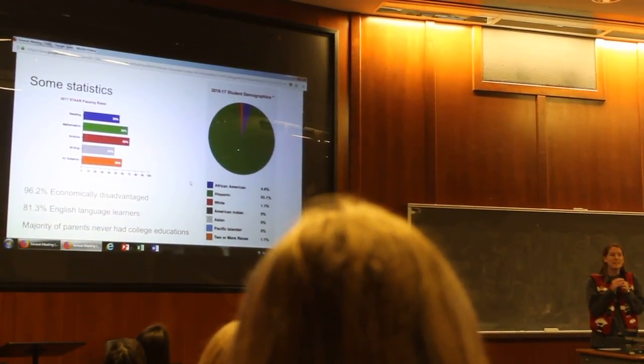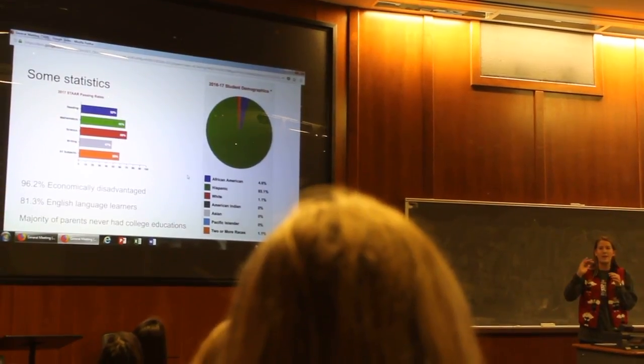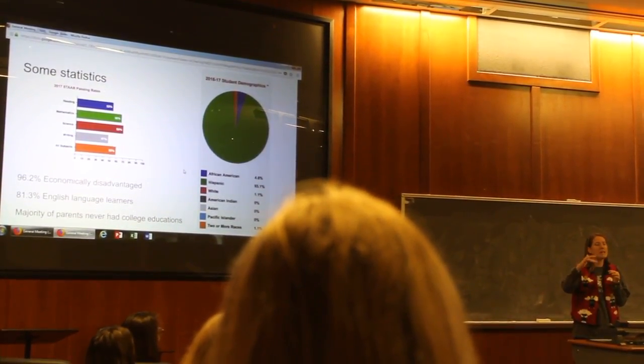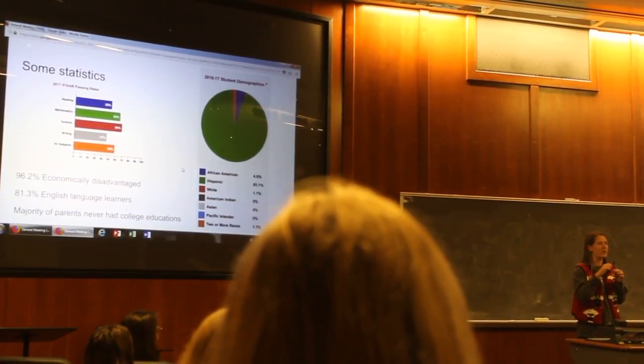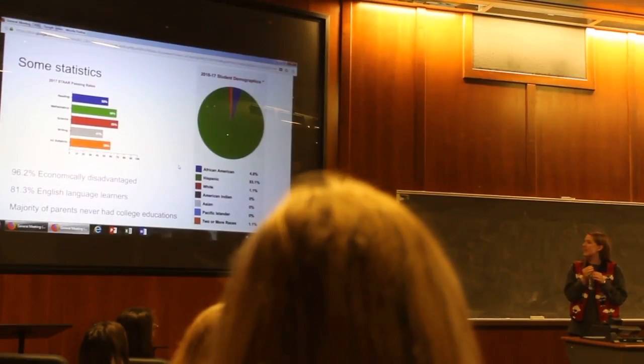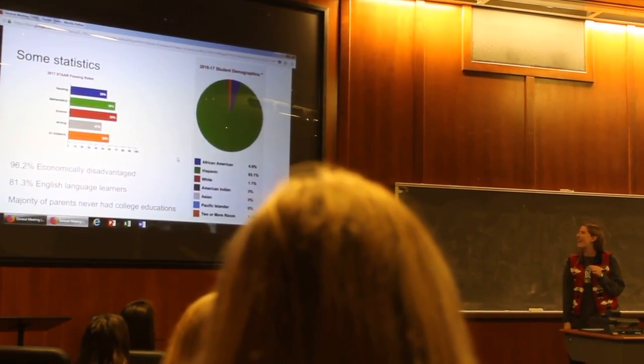We see that 96.2% of these kids fall through with economically disadvantaged category, which is defined by the state as an income level with a family meeting or below the requirements for reduced or free lunches. And so that's a huge number.